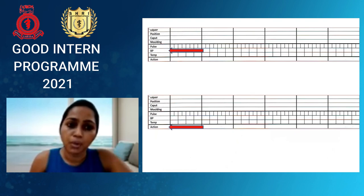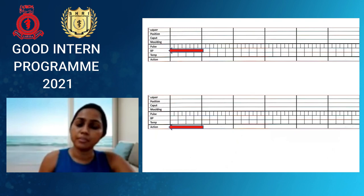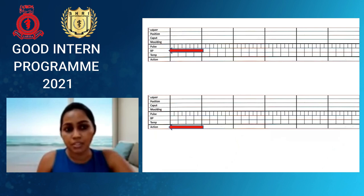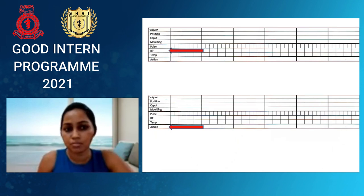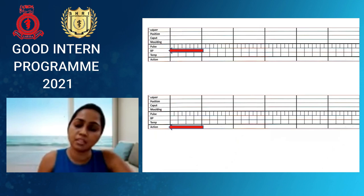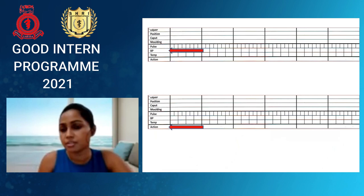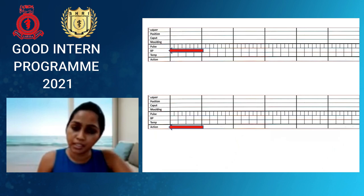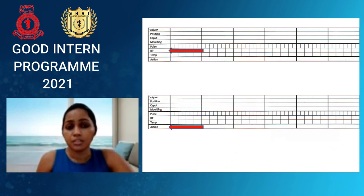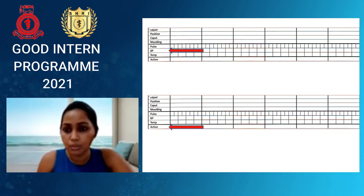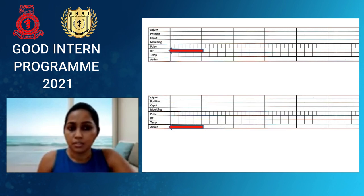The next boxes on the partogram are for maternal well-being monitoring: blood pressure, pulse rate, and temperature. The partogram recommends pulse every 30 minutes and blood pressure and temperature every 4 hours, but this frequency must be increased according to the clinical situation — for example, more frequently for a mother with pre-eclampsia or suspected chorioamnionitis.